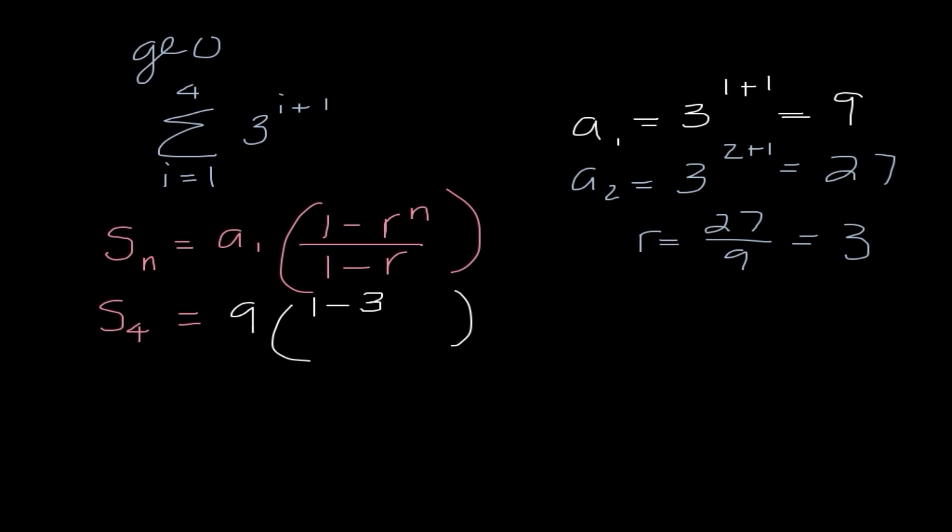So I have 1 minus 3 to the 4th power over 1 minus 3. And this is something that we can go ahead and put straight into our calculator. Once again, the important thing here is the way that I'm using my parentheses. So I need to put parentheses around the fraction, I also need to put parentheses around my numerator, and I also need to put parentheses around my denominator. And when I put that all in, I end up getting 360 is our sum. So that tells us the four formulas that you guys need to have memorized for our test.